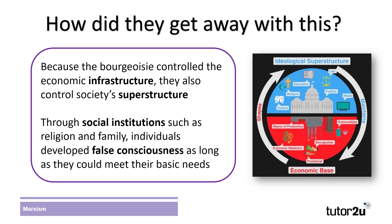This exploitation could have been addressed by workers bonding together to collectively bargain for higher wages, as was later seen in the trade union movement. They could threaten to withdraw labor and this would harm the profits of the bourgeoisie. However, as the bourgeoisie controlled the economic infrastructure, it also allowed them to control society's infrastructure — that is society's culture, legal systems, education and other social institutions. This enabled them to practice ideological control over the masses through passing on norms and values through religion, family and education that justified the exploitation of the proletariat, transmitting what Marx called false class consciousness, making the proletariat passive and docile and less likely to challenge society's inequalities, as long as they could meet their basic needs in society.